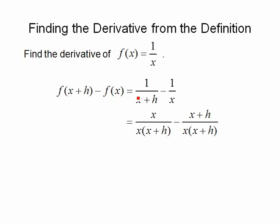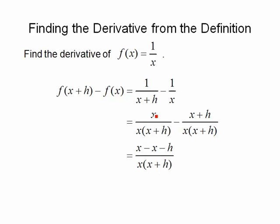The bottom of the first fraction gets multiplied by x, so the same on top; the bottom of the second fraction gets multiplied by x plus h, so the same on top. x times 1 gives x, and 1 times x plus h gives x plus h. Combining the two fractions, the top becomes x minus x minus h — and we need to remember to distribute that minus onto both terms in the numerator. The x's drop out, leaving minus h divided by the quantity x times x plus h.